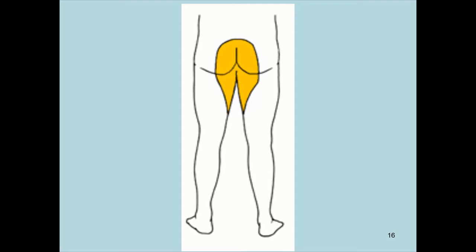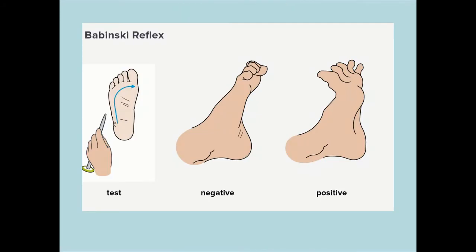One red flag in spinal conditions is saddle anaesthesia. The saddle refers to the area you sit on a horse — medically, the area around the anus and perineal floor. If a patient has anaesthesia in this region — for example, they can't feel bowel motions being passed — that can indicate serious pathology, particularly cauda equina syndrome, which requires urgent attention.